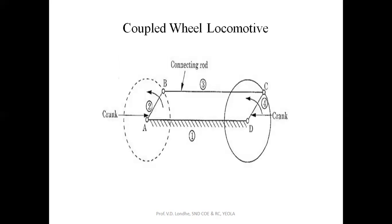In the coupled wheel locomotive, there are 4 links: the first link is fixed, called the frame; the second is the crank; the third is the coupler; and the last is the rocker. The length of the second and fourth links are the same, and the length of the first and third links are the same. So the second link acting as a crank has rotary motion, and the fourth link, having the same length as the second, also has rotary motion. Here the rotary motion of the crank is converted into rotary motion of the output link. This mechanism is observed in railway wagon wheels, where each wheel is connected by a fixed frame with relative rotary motion. It is also called the double crank mechanism.